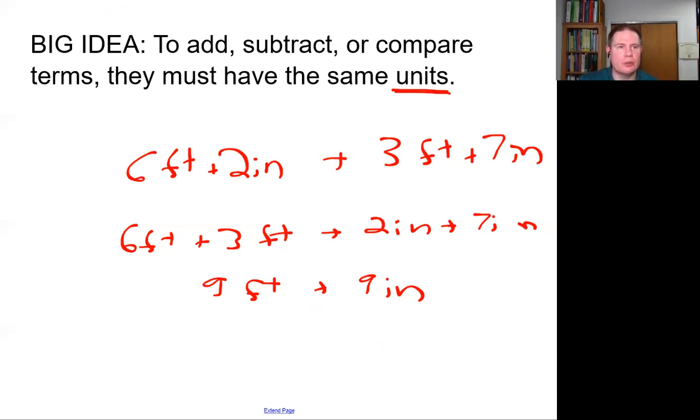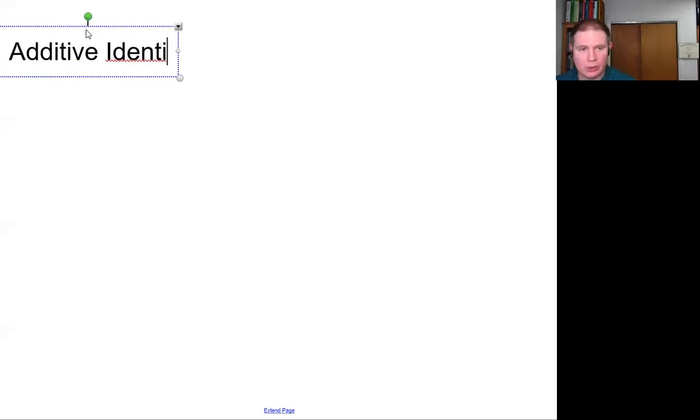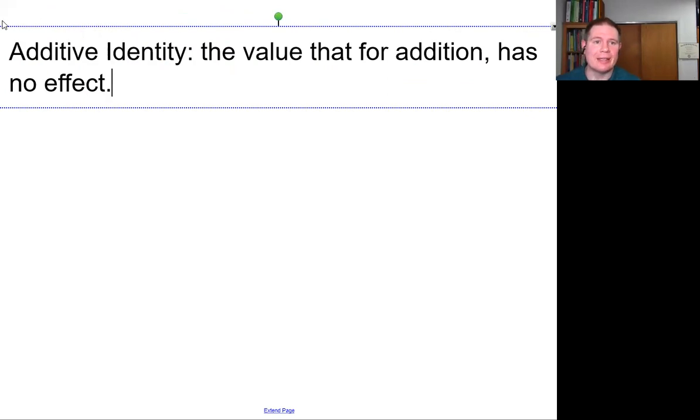Now, one more really quick definition. And that is the most interesting or least interesting, depending on your perspective, the most interesting or least interesting value for addition. And that is the additive identity. An identity is a noun. And in mathematics, the identity is the value. The identity is a value that has no effect. It's not effective. If you add the identity to something, it doesn't change it.